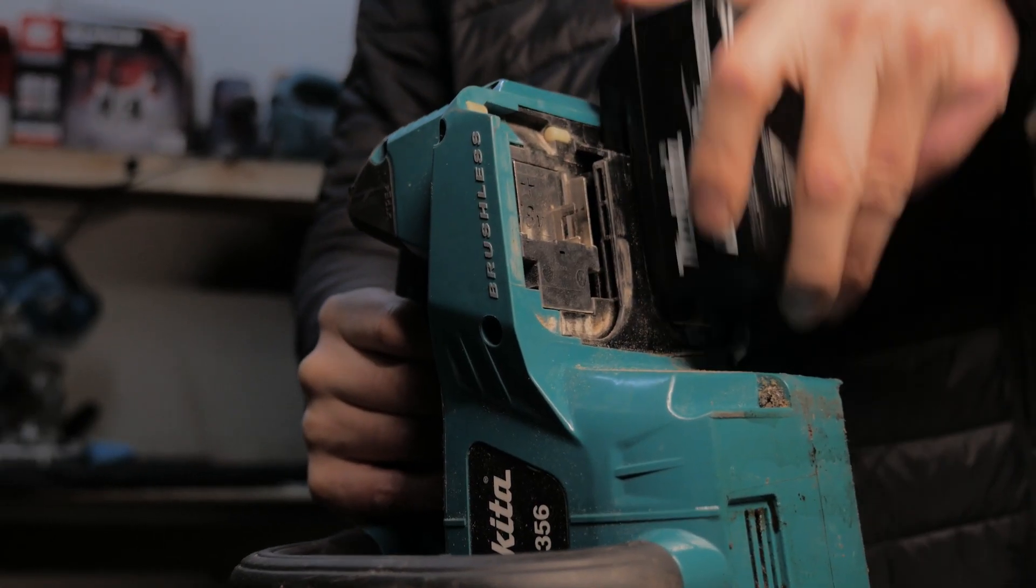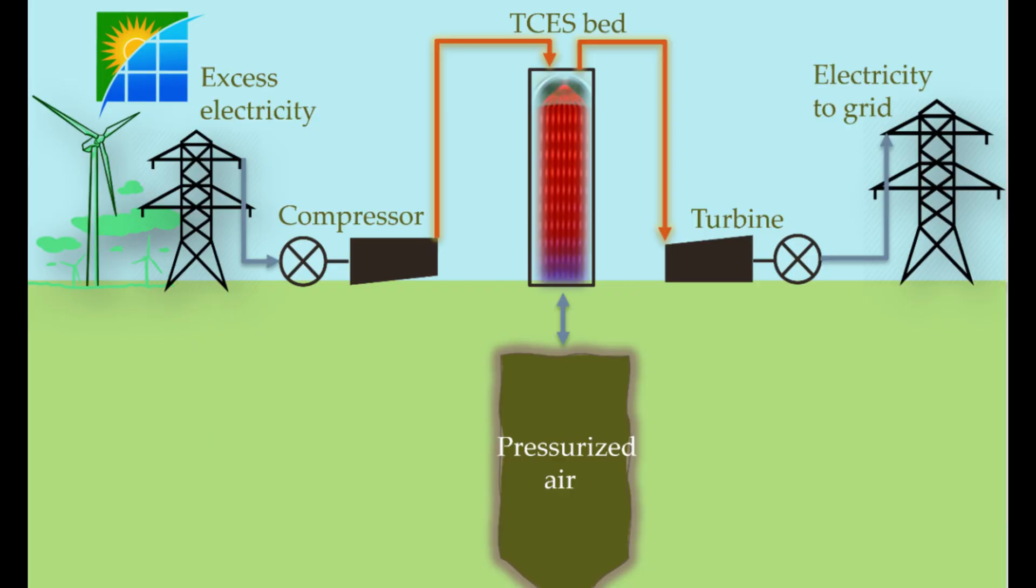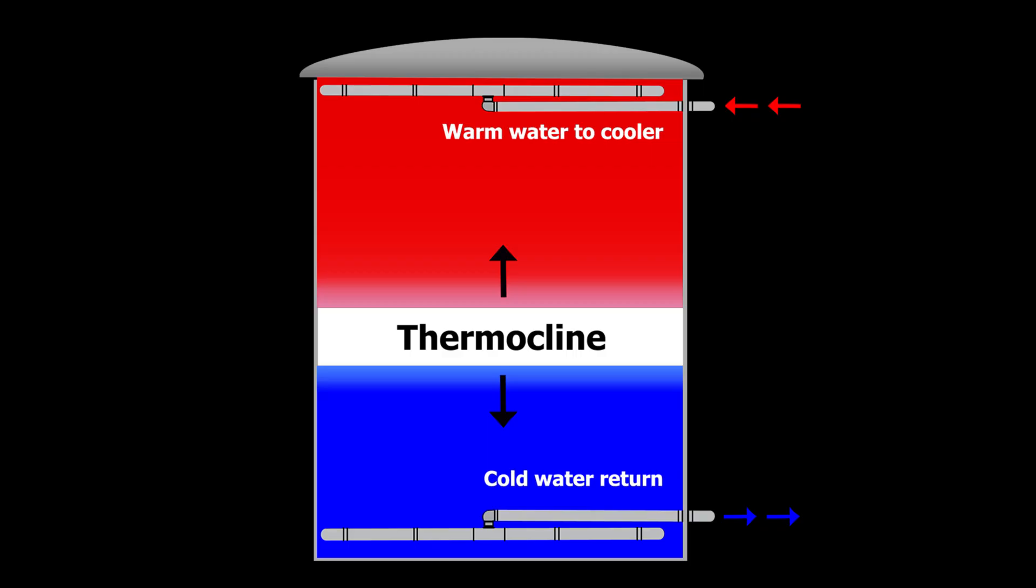There are many types of energy storage systems, such as chemical batteries, flywheels, compressed air, thermal storage, and pumped hydro.